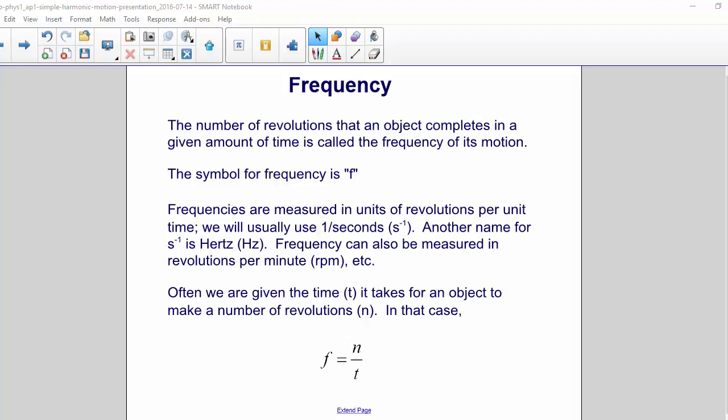Frequencies are measured in units of revolutions per unit time. We will usually use 1 over seconds, or seconds to the negative 1 power. Another name for this is hertz. Frequency can also be measured in things like revolutions per minute.